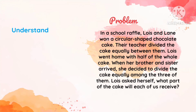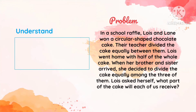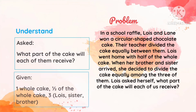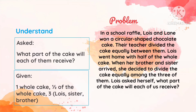By understanding the problem, we look for what is asked. What is asked is: what part of the cake will each of them receive? The given fractions or numbers are one whole cake, one-half of the whole cake, and the three siblings — Louise, her sister, and her brother.